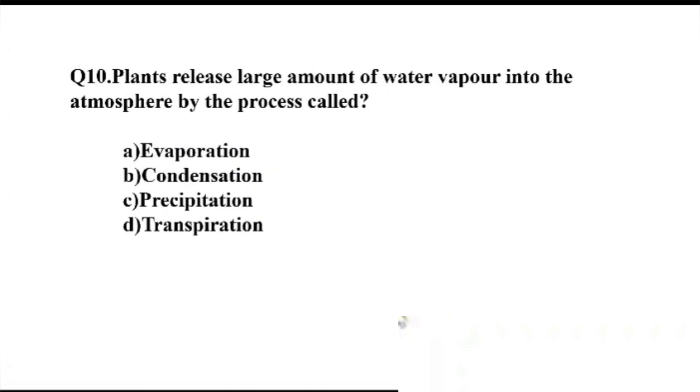Question number 10. Plants release large amount of water vapor into the atmosphere by the process called? Option A, evaporation. B, condensation. C, precipitation. D, transpiration. The right answer, Option D, transpiration.